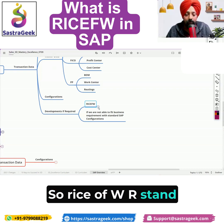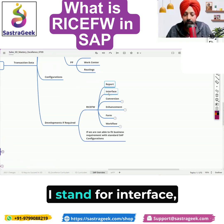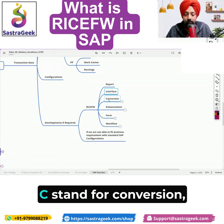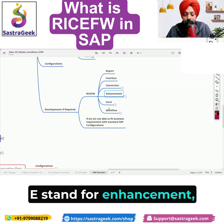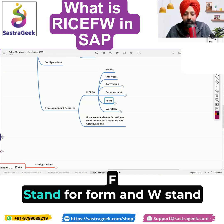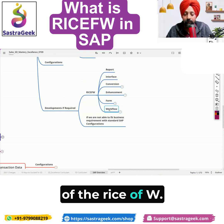So RICEFW — R stands for Reports, I stands for Interface, C stands for Conversion, E stands for Enhancement, F stands for Form, and W stands for Workflow. This is the meaning of RICEFW.